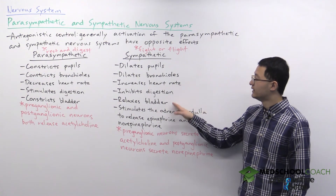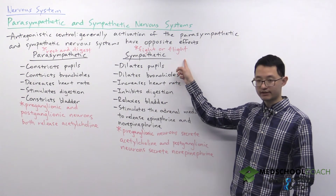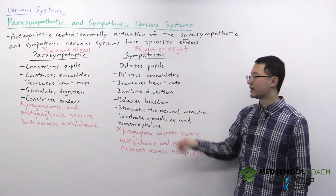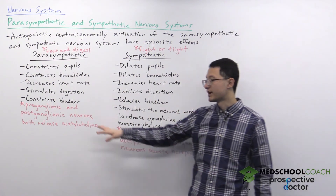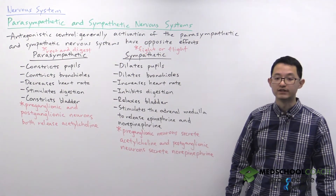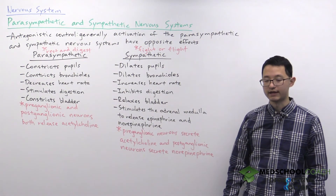For the bladder, the sympathetic nervous system will relax the bladder whereas the parasympathetic nervous system will constrict the bladder.